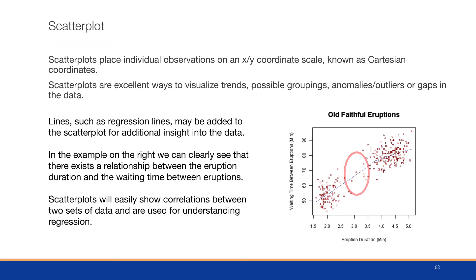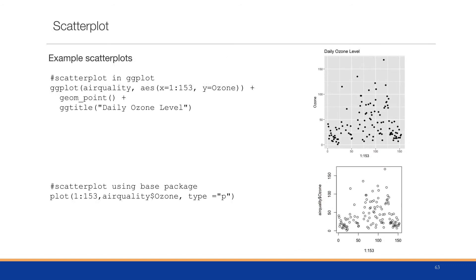Scatter plots will easily show the correlations of the two sets of data, and they're used in understanding for regression. Here we have two examples of producing the scatter plot, one using the ggplot, and the other using the standard R plot.